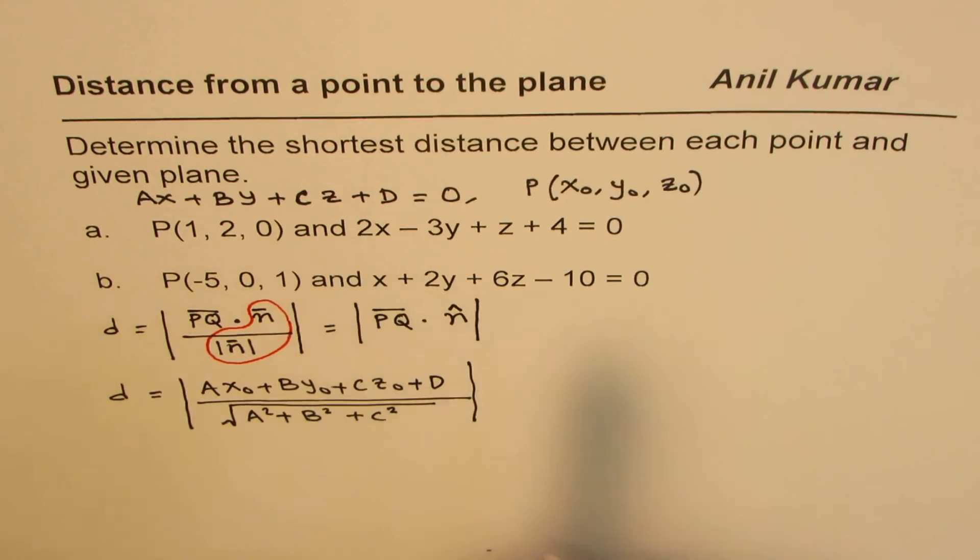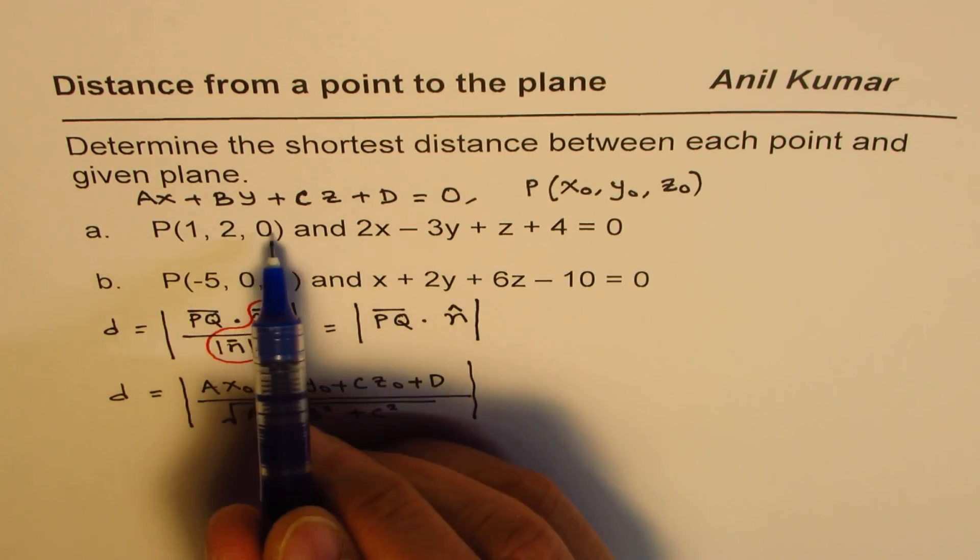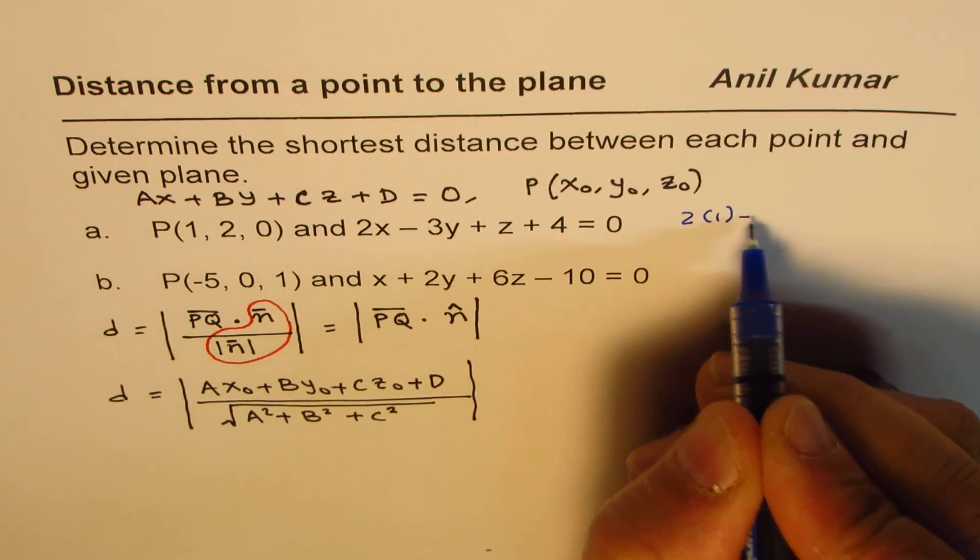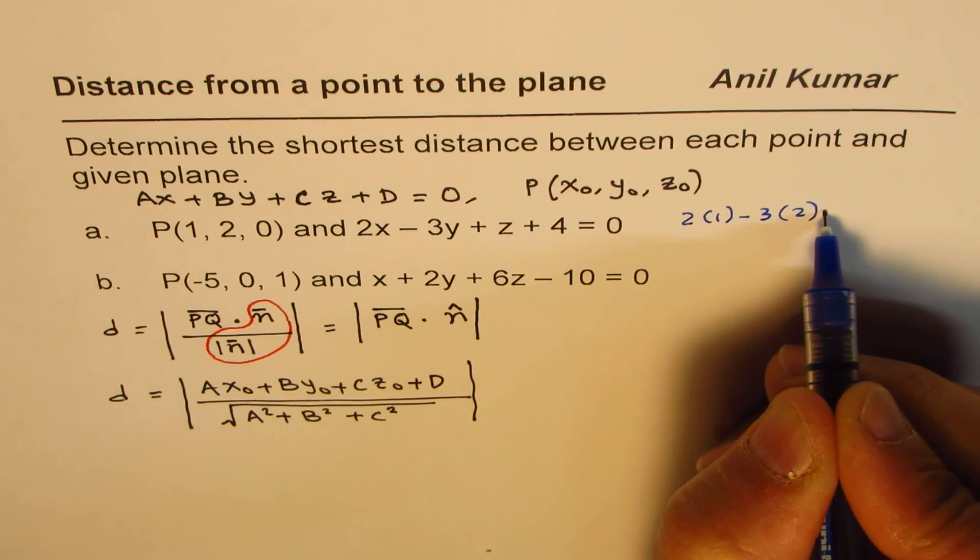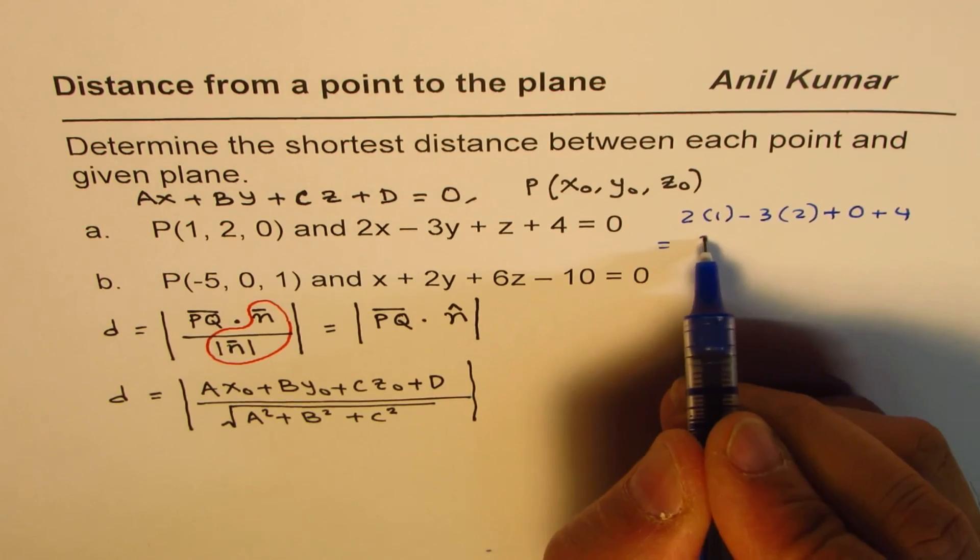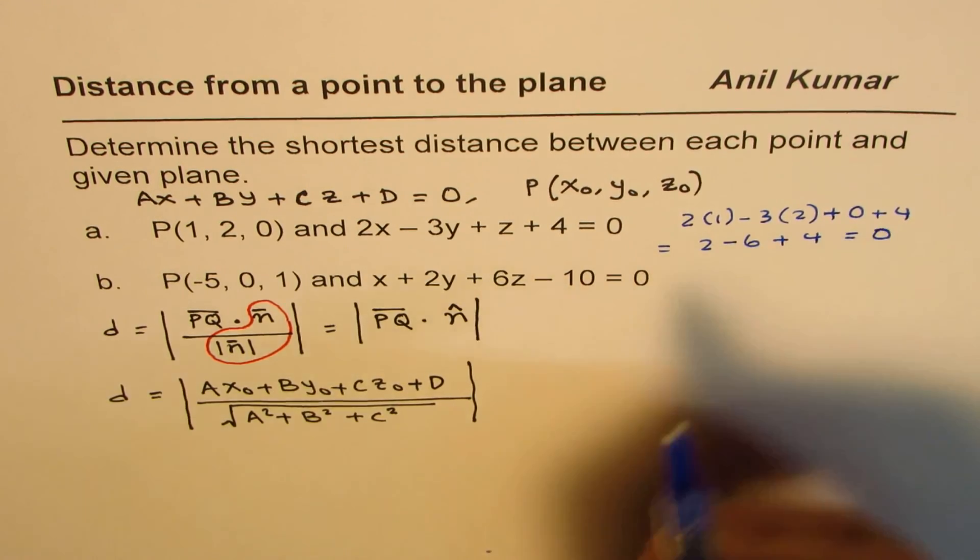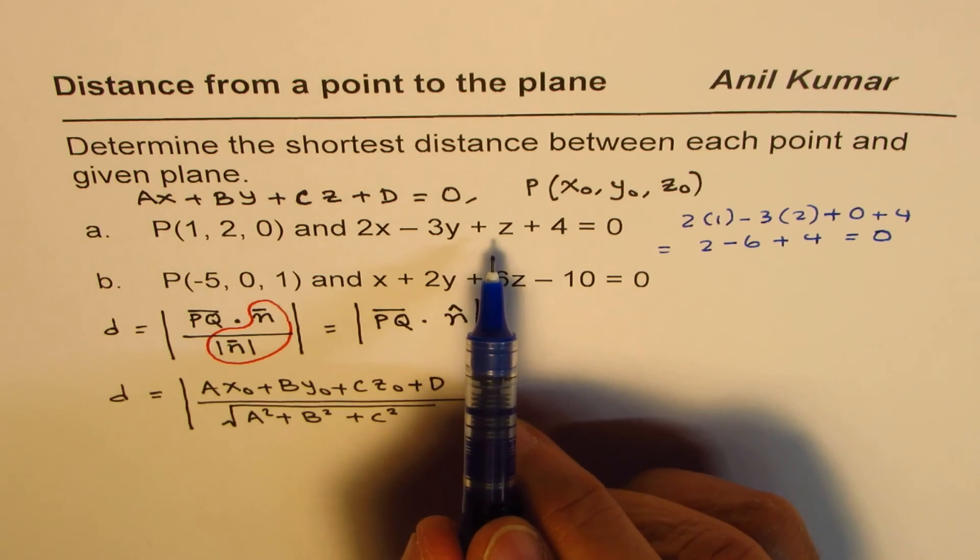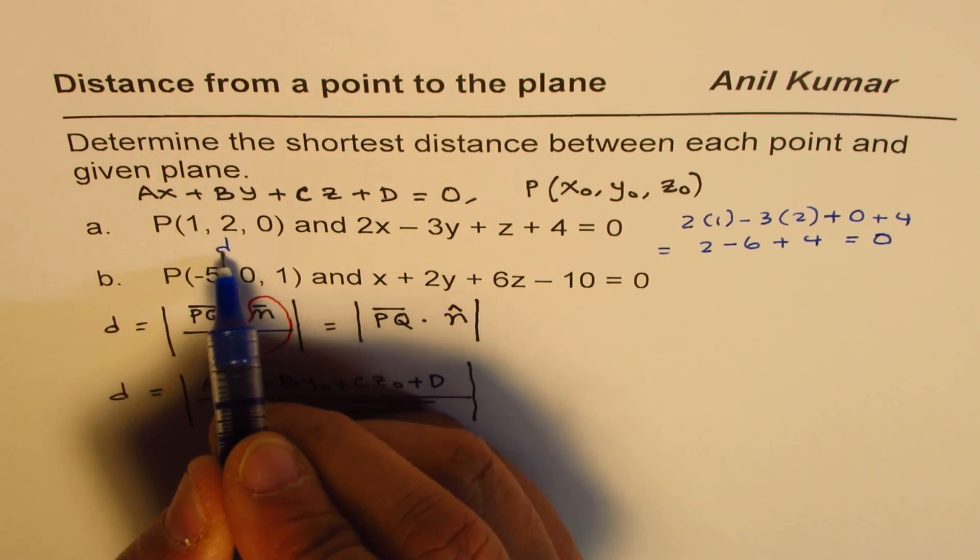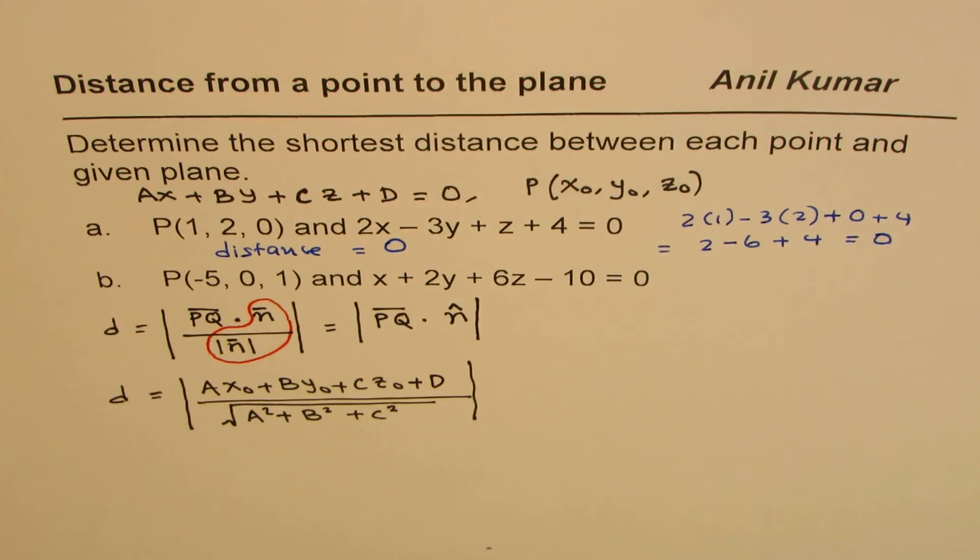See, if I substitute the point here, that is to say, if I write x as 1, y as 2, z as 0, what do I get? I get 2 times 1, minus 3 times 2, plus 0, plus 4, and that equals 2 minus 6 plus 4, indeed it is equal to 0. So, this point satisfies the equation of the plane, that means the point is on the plane. And therefore, here in this case, distance equals to 0, since the point is on the plane.